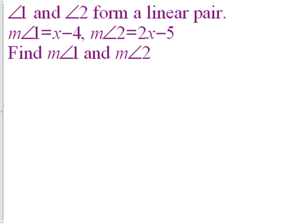Our last example here says angles one and two form a linear pair. Angle one is x minus 4. Angle two is 2x minus 5. The question is to find the measure. Remember that little m in front of the angle sign means the measure, the measure of angle one and the measure of angle two. In order to solve this problem, we have to go all the way back to the beginning where it tells us that angles one and two form a linear pair. A linear pair means that they add up to 180 degrees. They are supplementary.